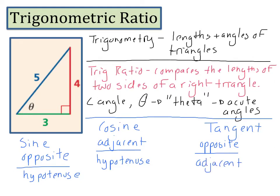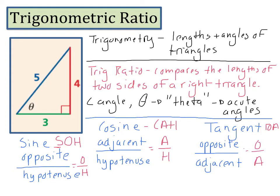To help you remember these ratios, we use the mnemonic SOH-CAH-TOA. SOH: sine refers to the opposite over the hypotenuse. CAH: cosine is adjacent over hypotenuse. And TOA: tangent is the opposite over the adjacent.